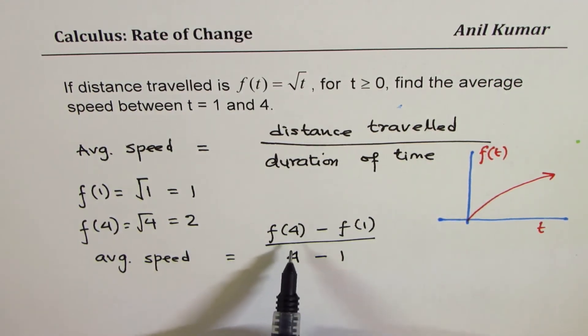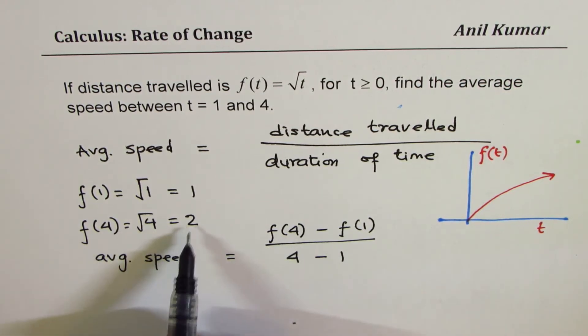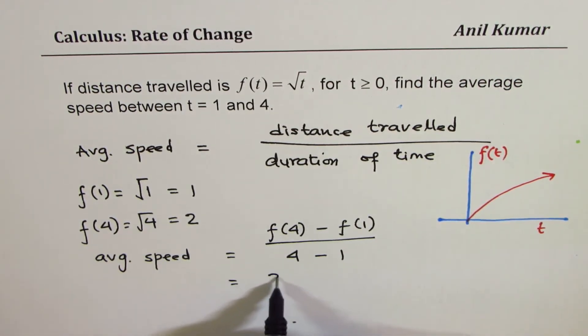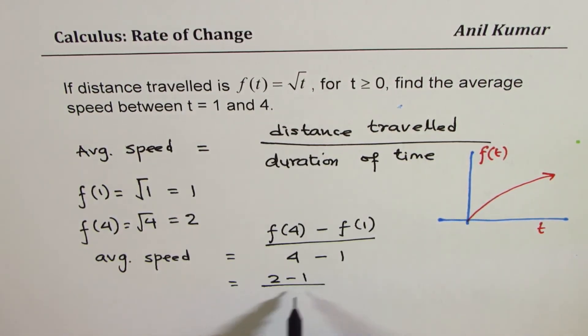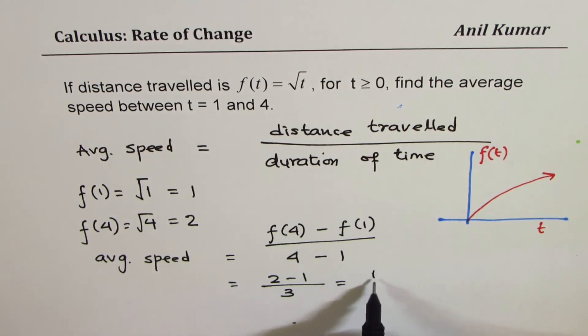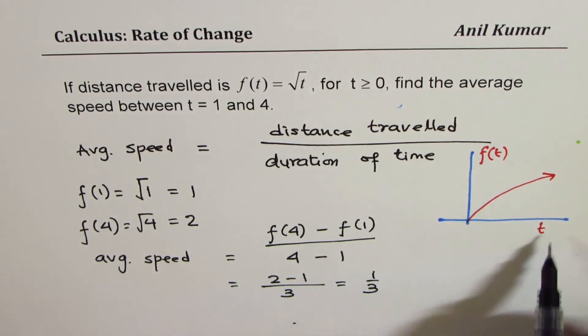So what we get here is the value of f(4) is 2, so we get the answer as 2 - 1 over 3, or 1/3. Units of distance over time. That is what the answer is.